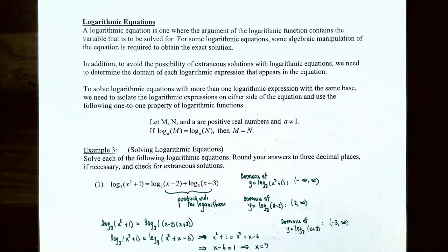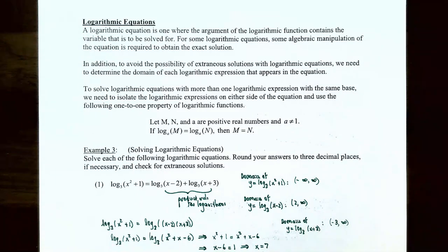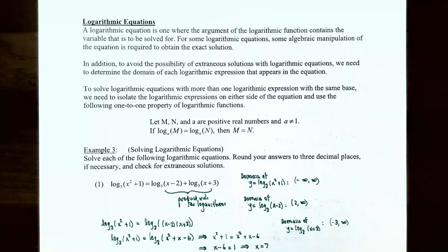A logarithmic equation is where the argument of a logarithmic function contains the variable you're trying to solve for. Some algebraic manipulation may be required to obtain the exact solution. It's also important to note there is a possibility of extraneous solutions — solutions that are not part of the domain of a logarithmic expression — so you need to determine the domain of each logarithmic expression in the equation.